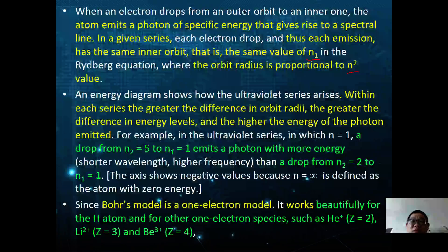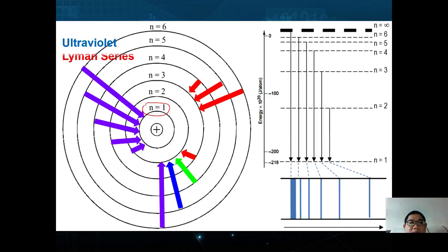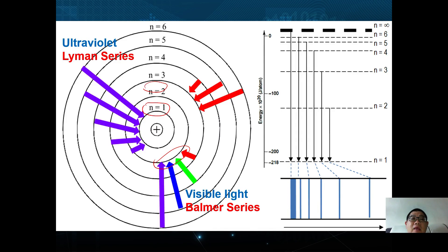This system works for one-electron species only, and works beautifully for hydrogen, He⁺, Li²⁺, and Be³⁺. For the Lyman series (ultraviolet), electrons at higher energy levels fall to the ground state at n = 1. For the Balmer series (visible light), all electrons fall to n = 2. For the Paschen series (infrared), electrons fall to n = 3.